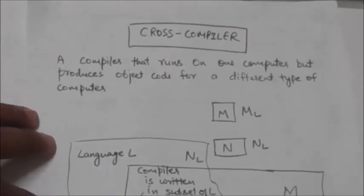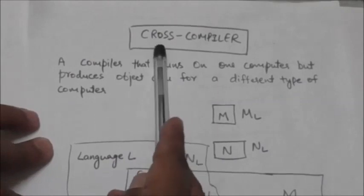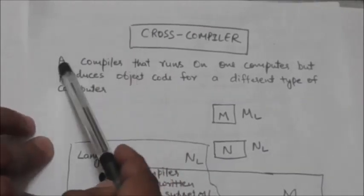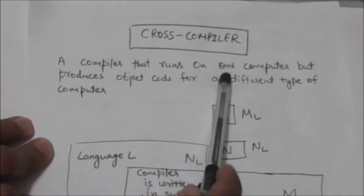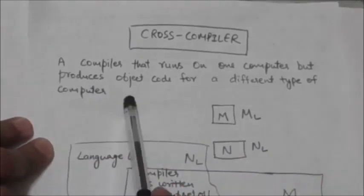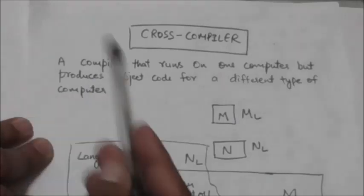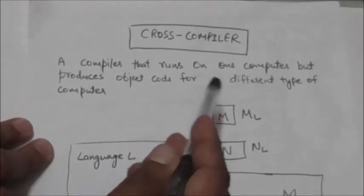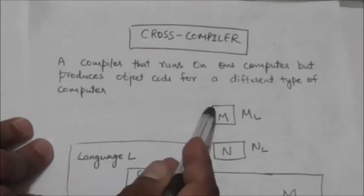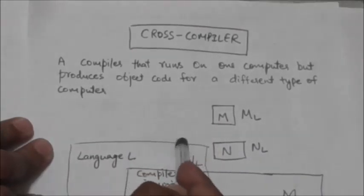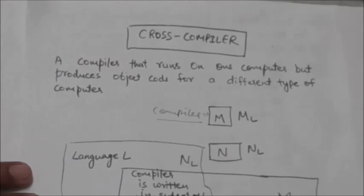Hello friends, welcome back. In this tutorial we will study about cross compiler. A cross compiler is a compiler that runs on one computer but produces object code for a different type of computer. In other words, a cross compiler runs on one machine but generates code which is executable on some another machine.